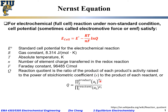More formally, Q is the product over all species of the activity for species i raised to the power of νi, where νi represents the stoichiometric coefficient for species i — positive for products and negative for reactants.